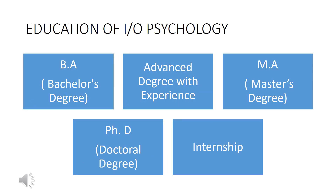Regarding the education of industrial and organizational psychology: a Bachelor's degree is of three years. An advanced degree where degree and experience are both counted. A Master's degree is of two years. A Doctoral degree is of four years, and there is also internship. This is the educational aspect of industrial and organizational psychology.